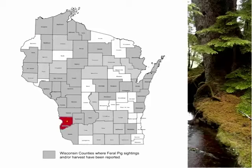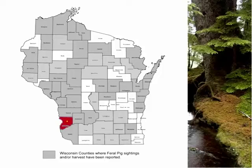On the map of Wisconsin, Crawford County is highlighted in red — that's the only known location where we have a breeding population of wild pigs. The rest of the counties shaded in gray are counties where we've had sightings. Those have either turned out to be a feral pig that escaped or was released by someone, but never resulted in a breeding population that persisted. So feral pigs aren't that widespread across Wisconsin, but over the years they've been seen in quite a few places.